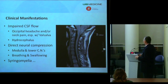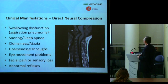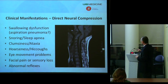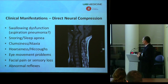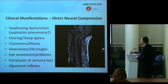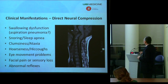The third big category is syringomyelia, which relates back to impairment of CSF circulation. Somehow the impairment of spinal fluid circulation at the foramen magnum creates a situation where — in some patients, up to a third of those operated on here — an abnormal fluid cavity called a syrinx develops within the spinal cord. Direct neural compression can also cause clumsiness or ataxia, voice changes, hiccups, disturbances of eye movements, facial pain or sensory loss, and reflex abnormalities.